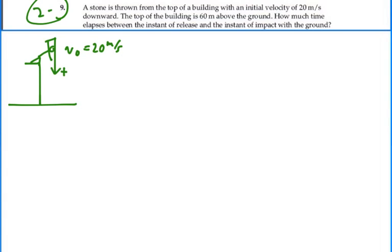We also know that everything in that direction will be positive. So acceleration will be a positive 9.8 meters per second squared. And our displacement down to the ground will be a positive 60 meters.